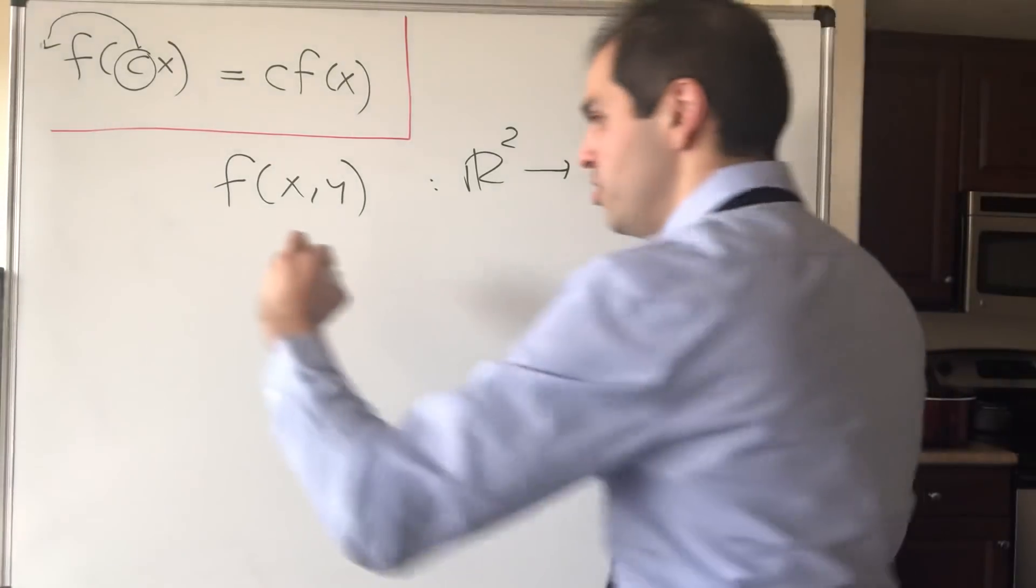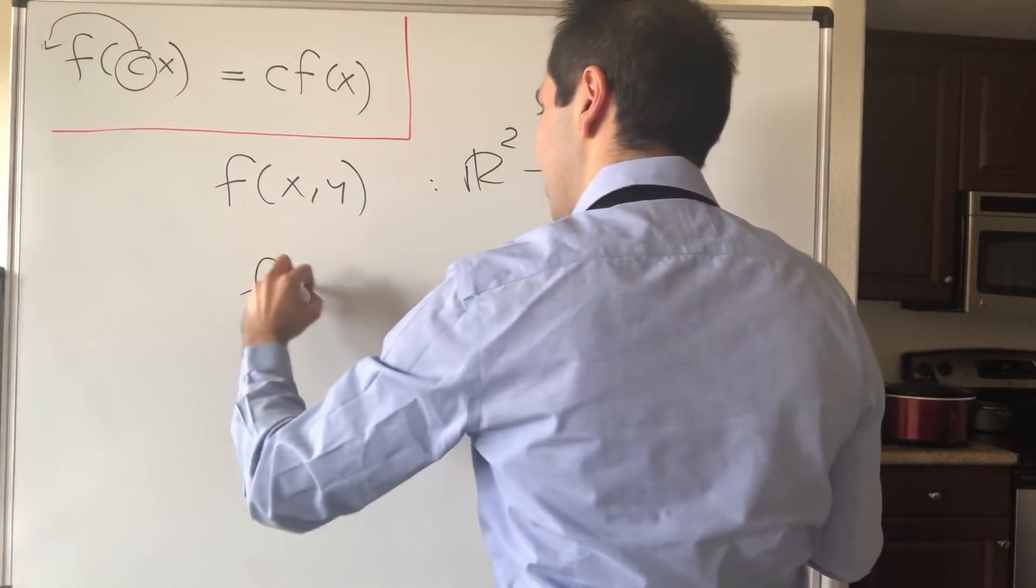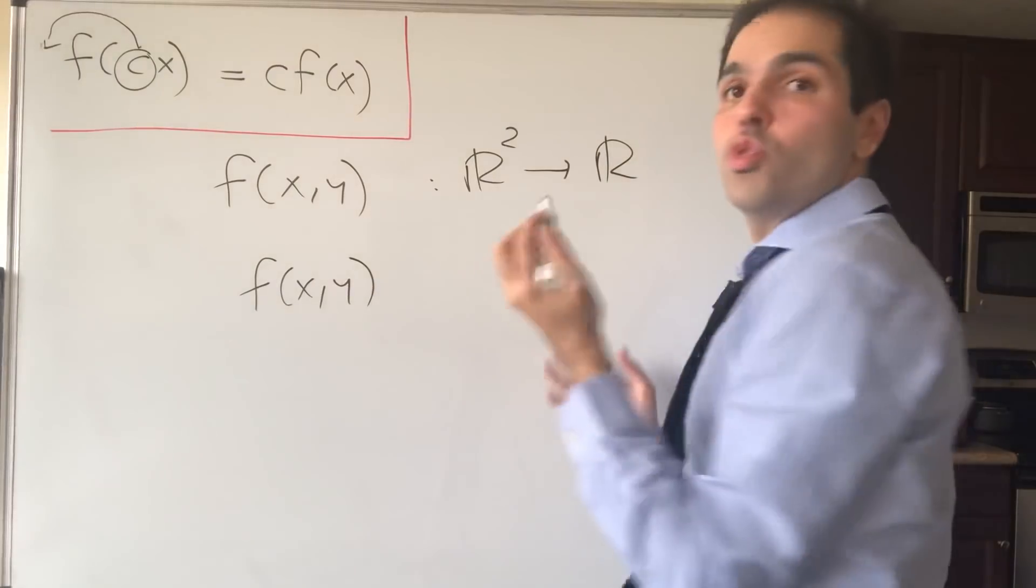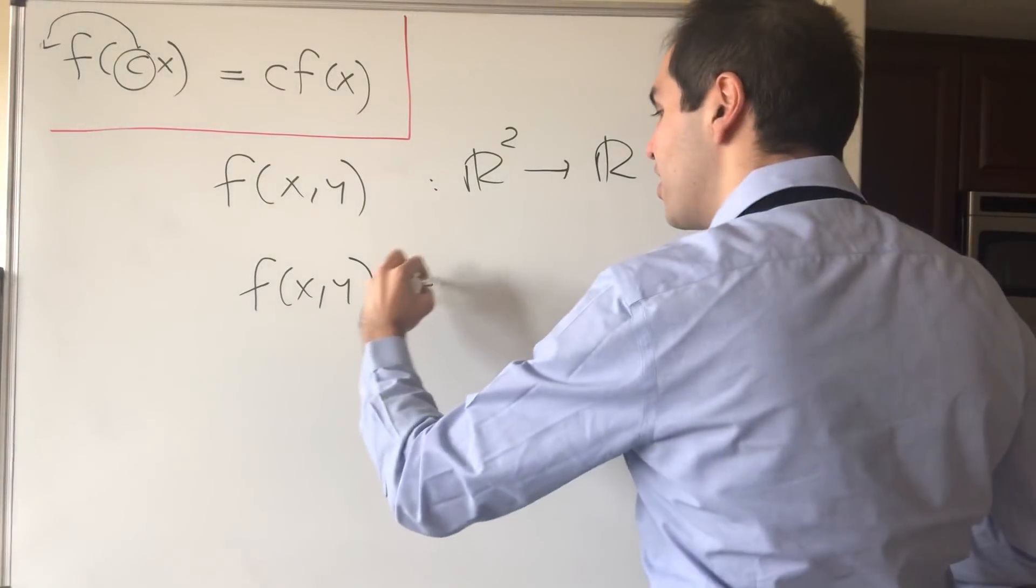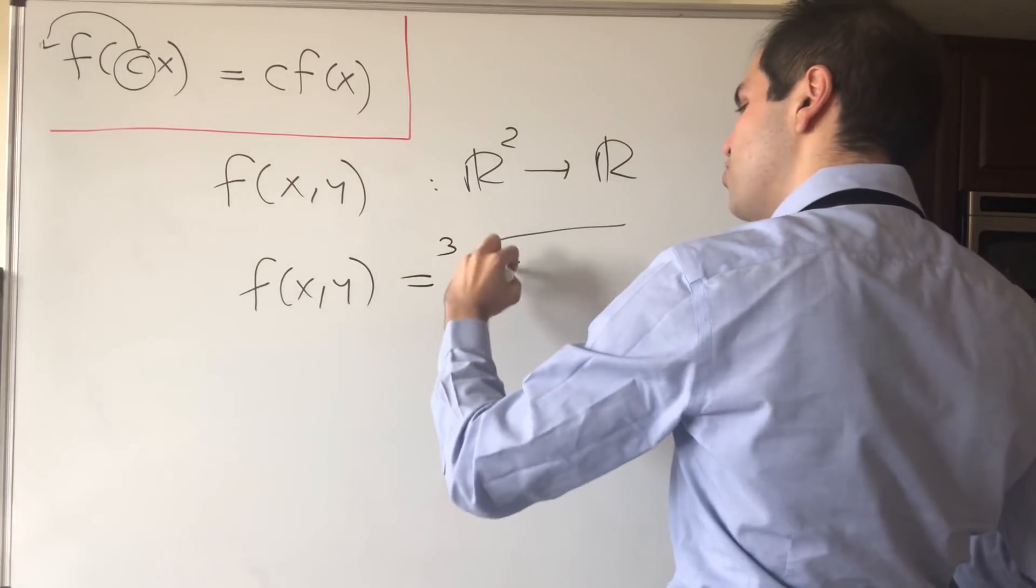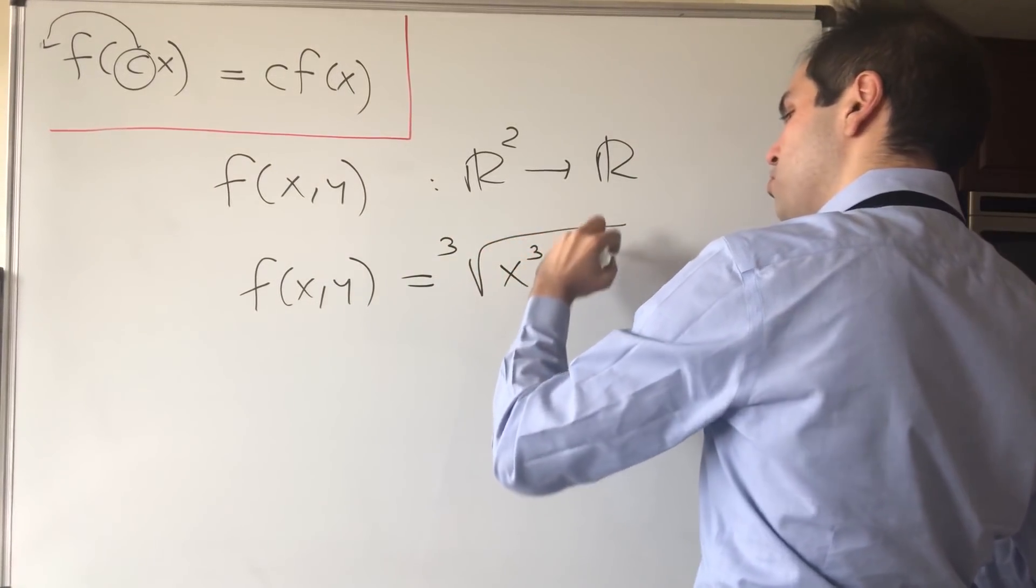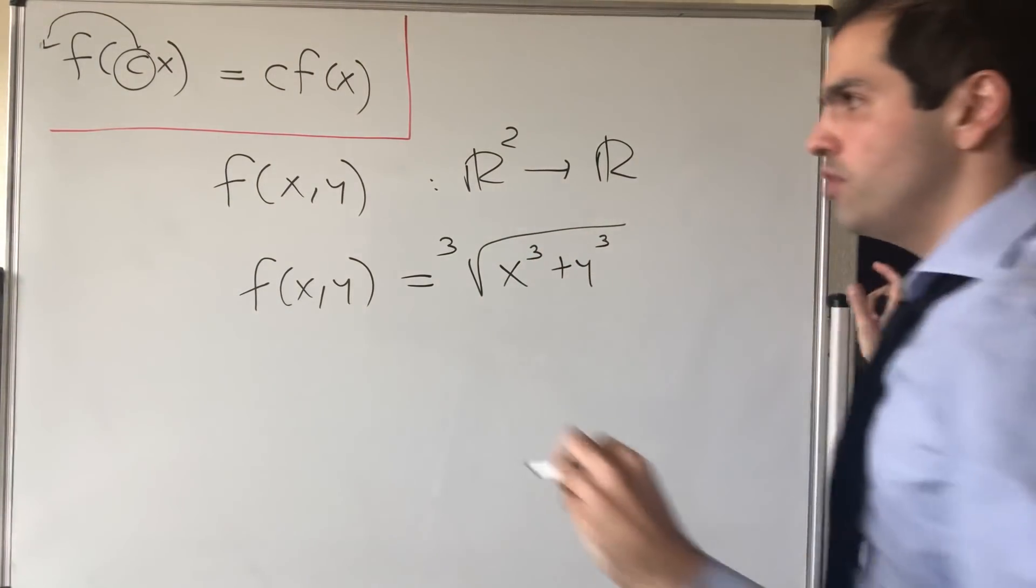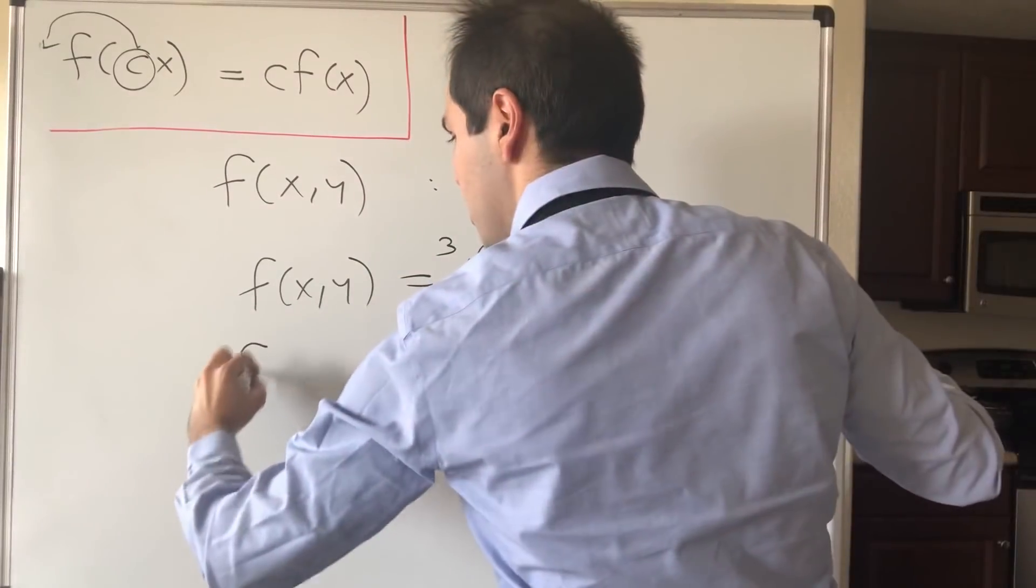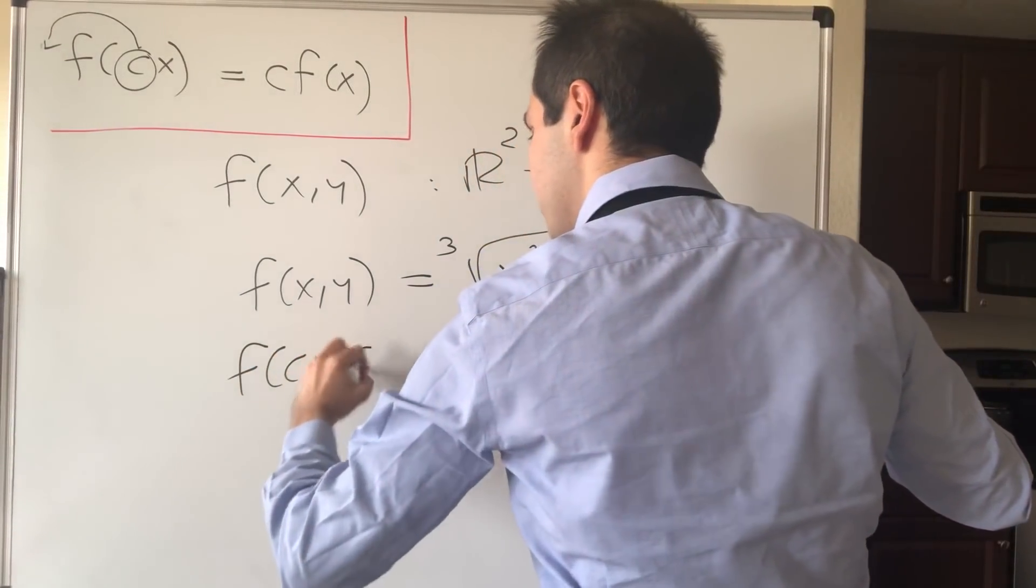For instance, take f of x, y. Not square root of x squared plus y squared, that wouldn't quite work. But let's take cube root of x cubed plus y cubed. You can indeed check that if you take f of cx, which would be f of cx, cy,